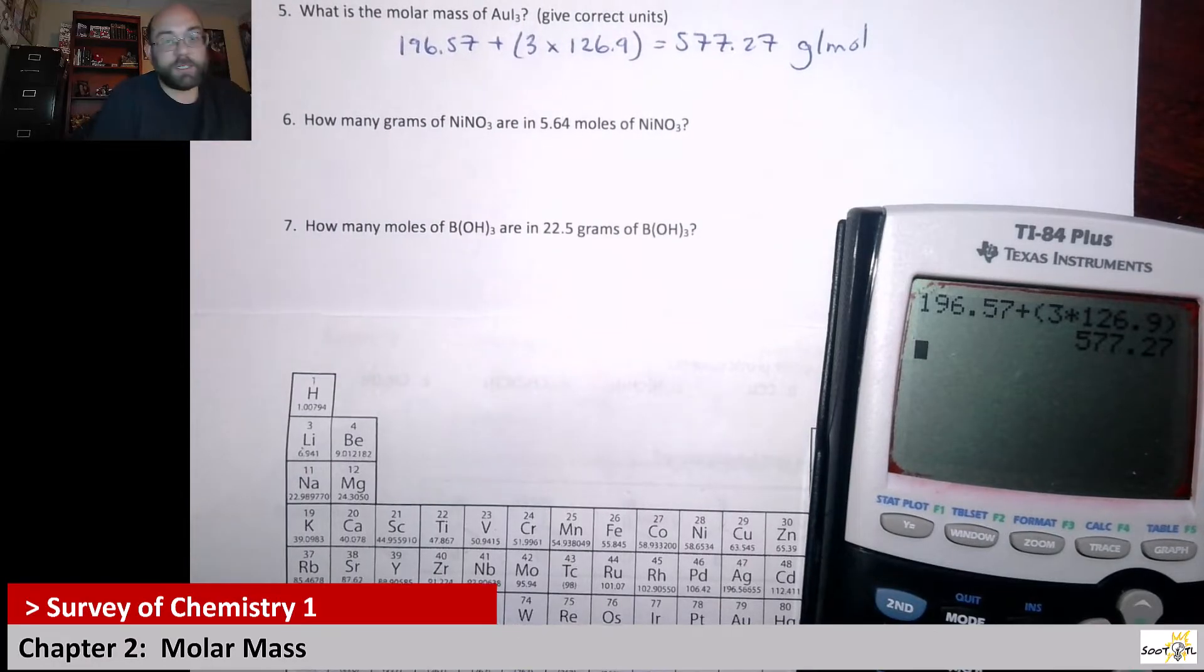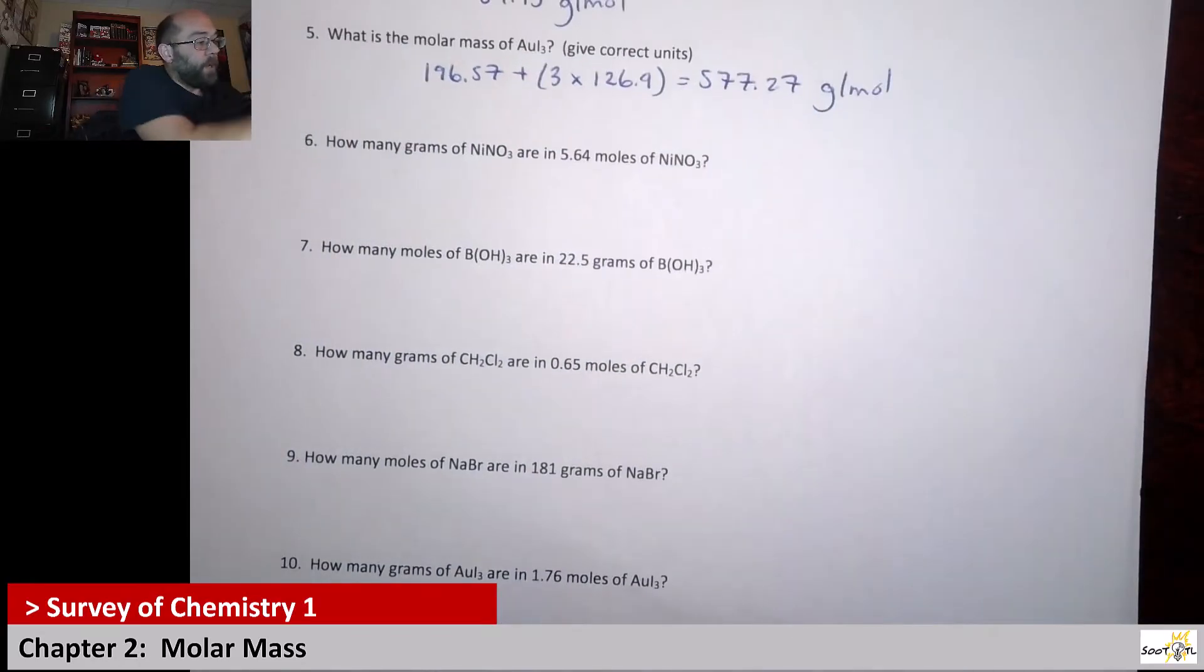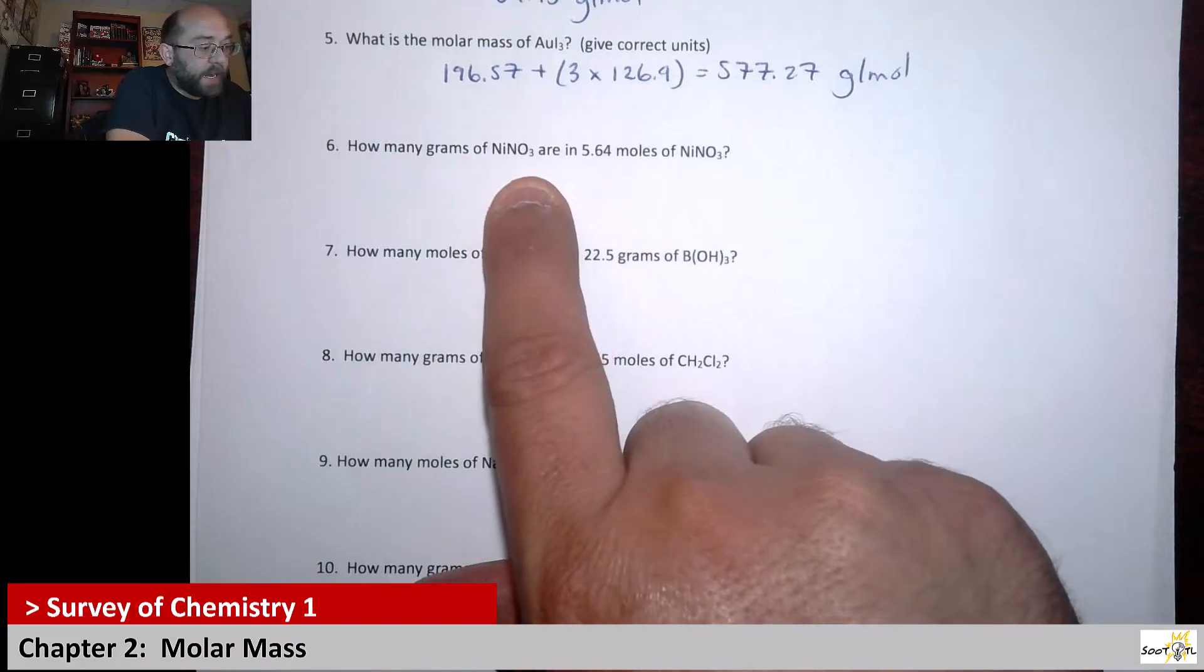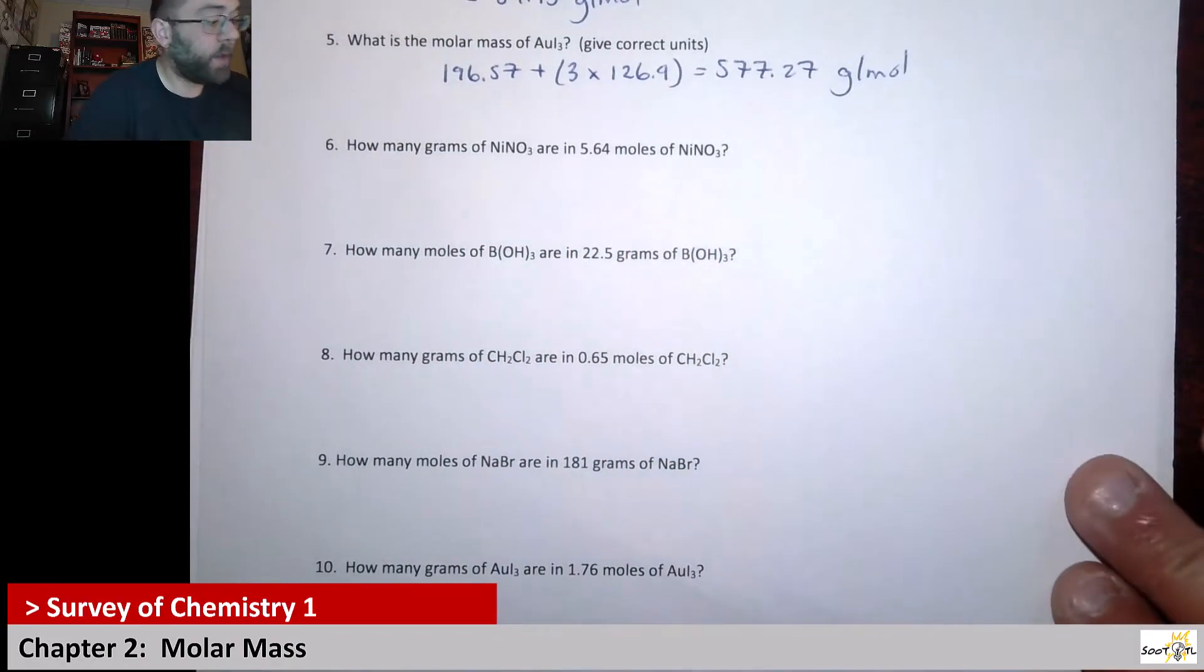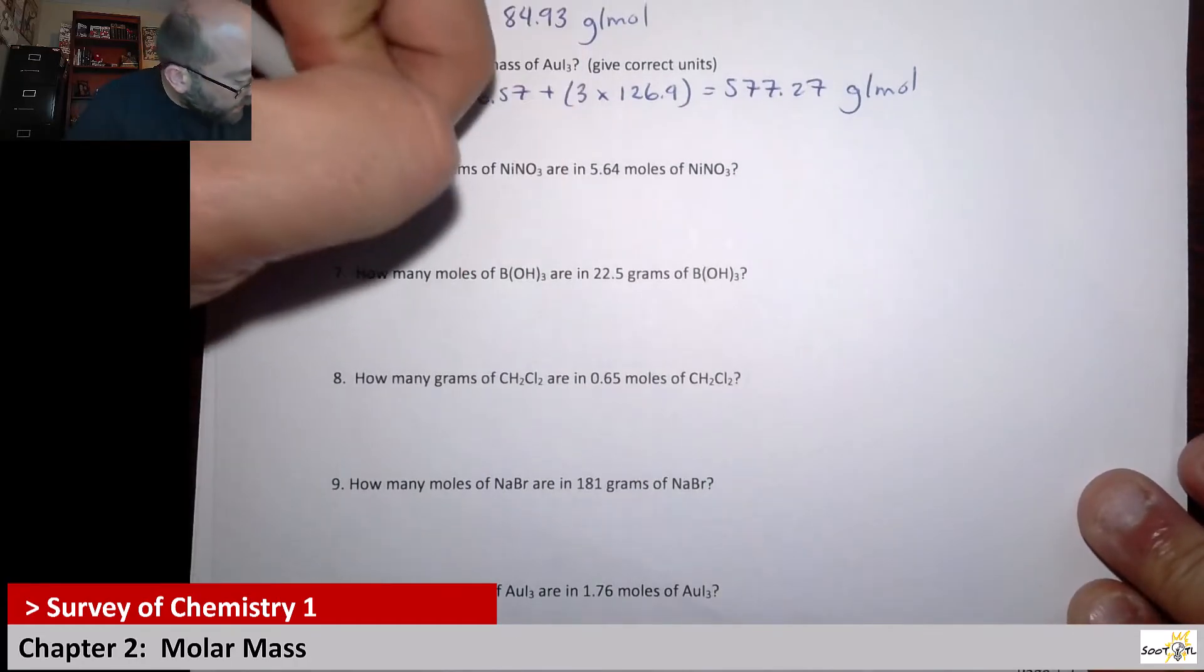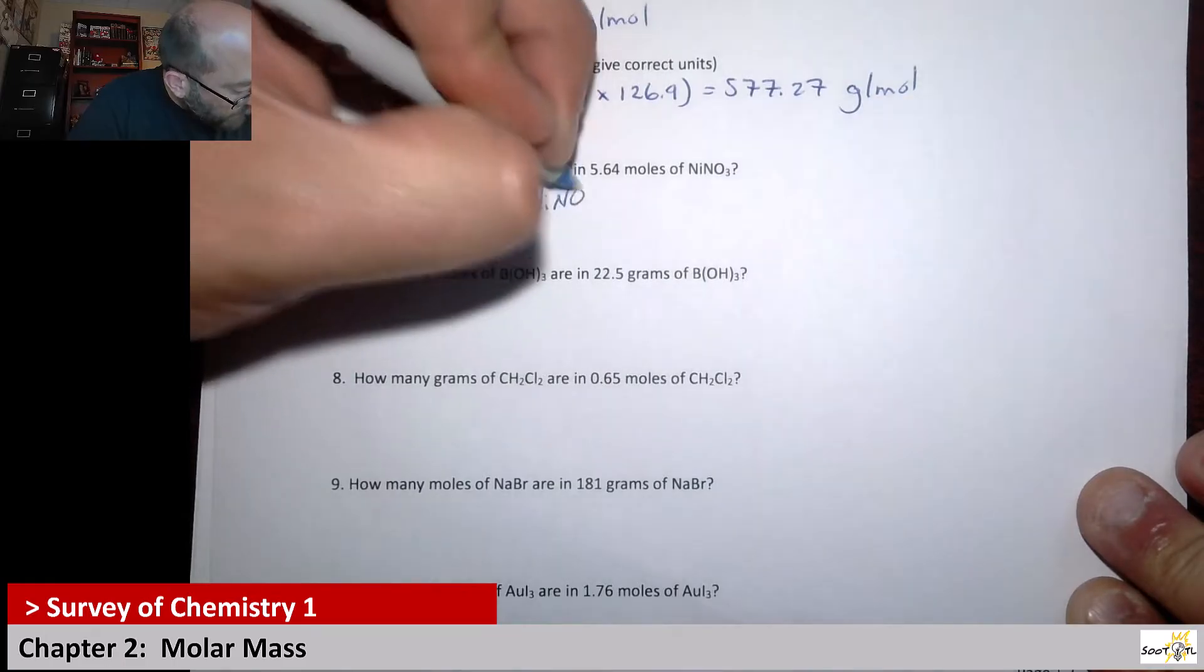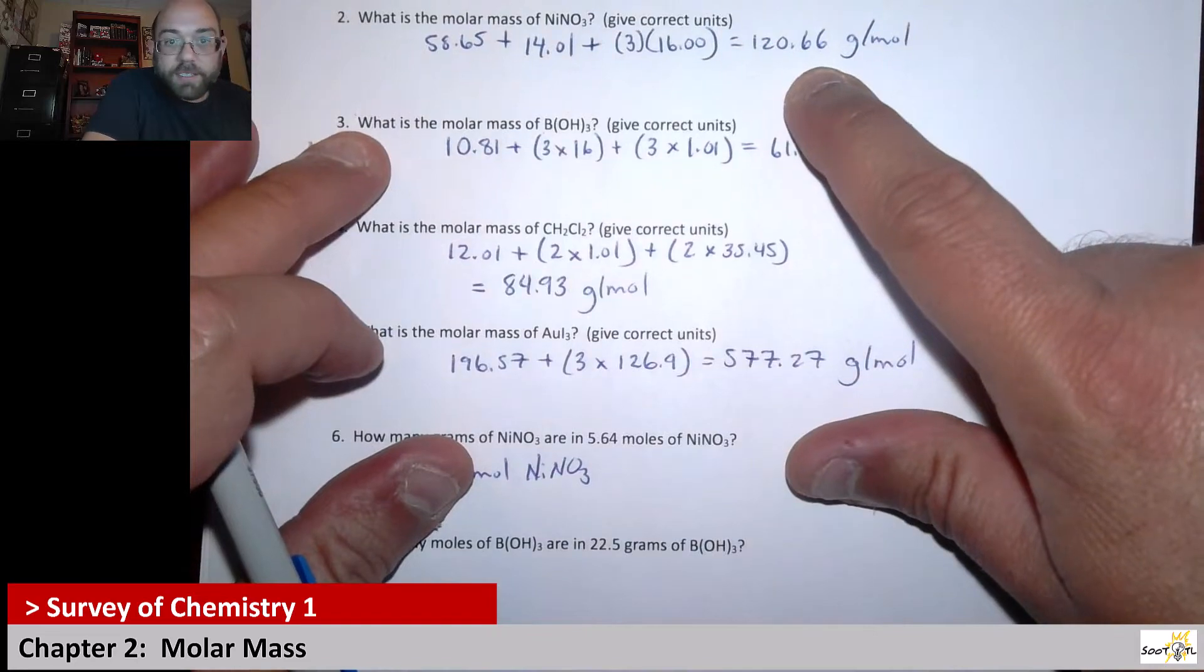Now these next questions, the next five questions, they kind of grow on that. So here it says how many grams of nickel nitrate, NiNO3, are in 5.64 moles of nickel nitrate. Well, that's the whole point of getting that molar mass. So if we have 5.64 moles of nickel nitrate, we've already calculated before the molar mass of nickel nitrate.